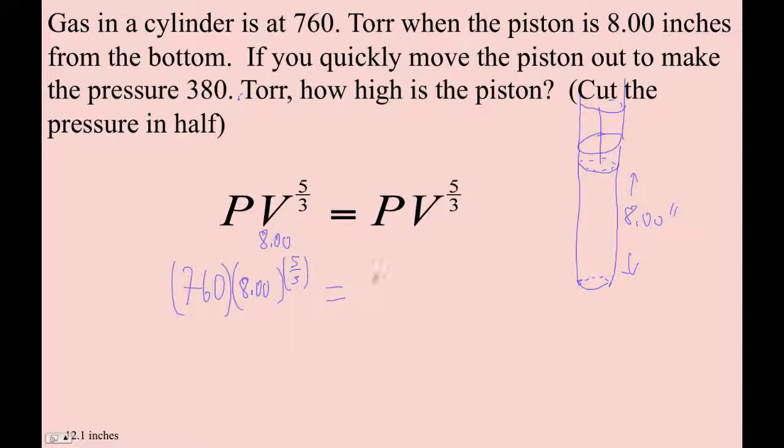And then that equals 380 times however many inches of cylinder that we have here, so we'll just call it x. So now we're going to figure out how high the piston needs to be. It's going to be higher, but it won't be twice as high. It'll be a little bit less.